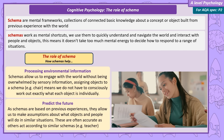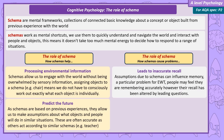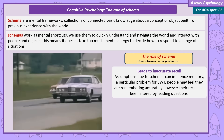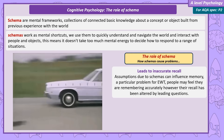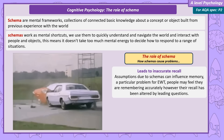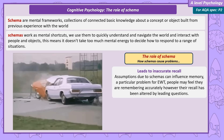Predictions based on schemas are usually accurate. However, a problem with schemas is they influence memory, leading to inaccurate recall — which is a particular problem for eyewitness testimony. People may feel they're remembering accurately, but their recall can be altered by leading questions. A researcher called Loftus found that, on average, participants who watched a video of a car crash and were asked how fast the cars were going when they 'contacted' each other gave a speed nine miles per hour faster when the word 'contacted' was replaced with 'smashed'. This is because our schema for 'smashed' is more intense, altering memory so the crash was recalled as more dramatic.